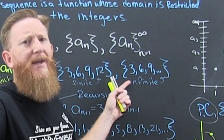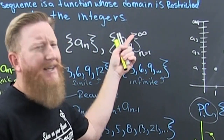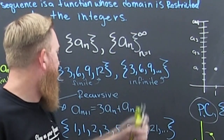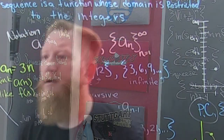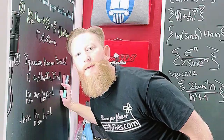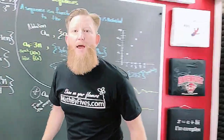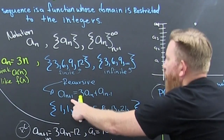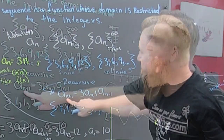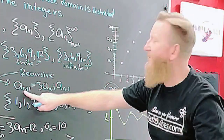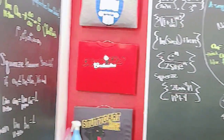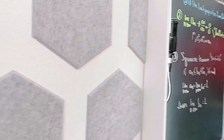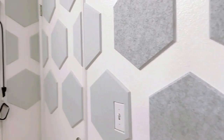These could go on forever, and the ellipsis indicates that. Now there's also recursion. A recursion says that the next term depends on the term before it — and even the term before that.